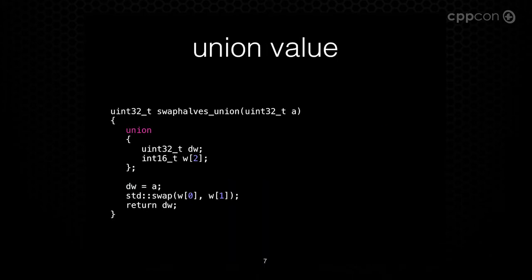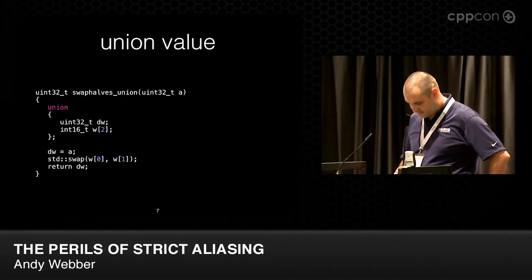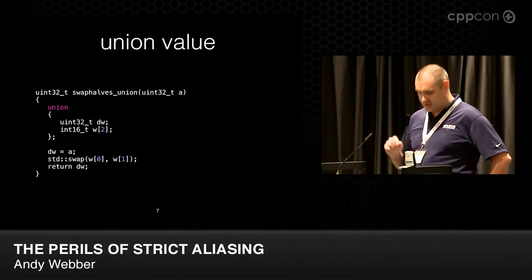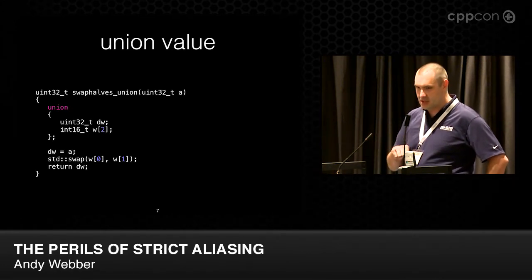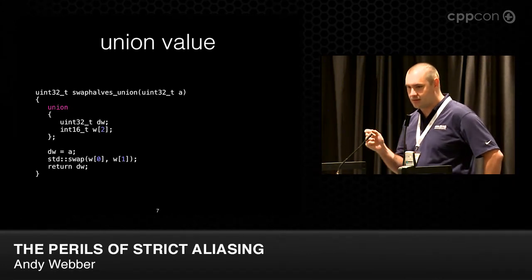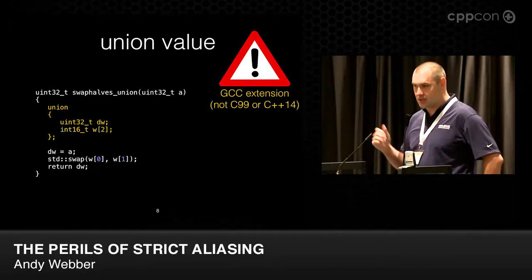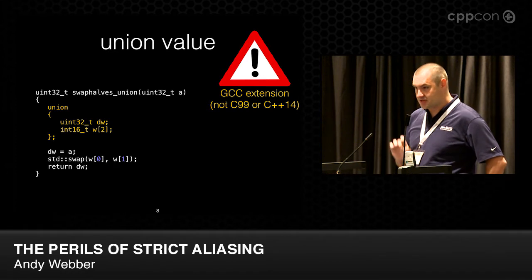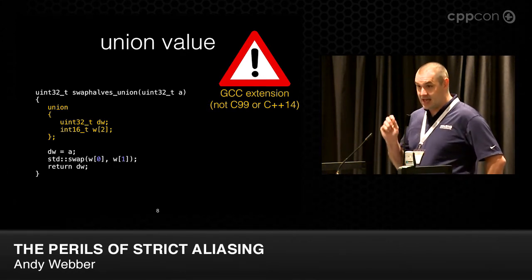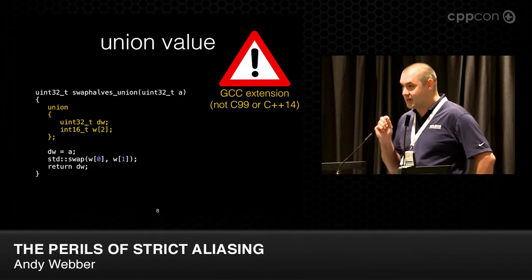So let's take a different approach — actually the same union. We're going to take a union of the types we care about, but essentially have a value of the union, copy into one side of it, and copy out of the other side. Slightly different example. This case does work, or is guaranteed to work, but only on GCC because it's a GCC extension to type-pun through unions — but only in this very special case where you copy in and out of it. A lot of people think it's C99, but it's not.